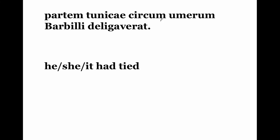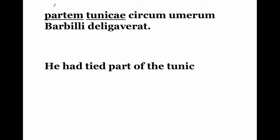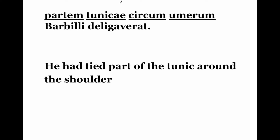Moving on: partem tunicai circum umerum barbili deligaverat. Deligaverat — again a pluperfect tense verb — he, she, or it had tied. Is there a nominative subject? No, so we assume this refers to Formio. He had tied partem — this is your accusative direct object — part of what? Tunicai, of the tunic, a genitive singular ending. Where had he tied part of the tunic? Circum — around. Around what? Umerum — the shoulder. Whose shoulder? Barbeli — the shoulder of Barbalus. This is a genitive singular ending for a second declension noun, and tunicai is a genitive singular ending of a first declension noun.